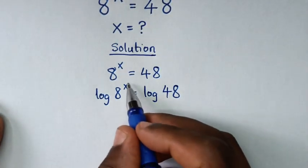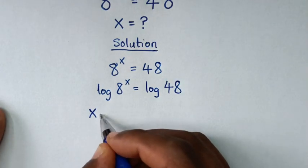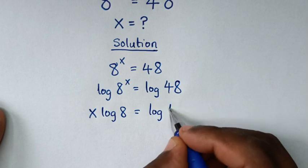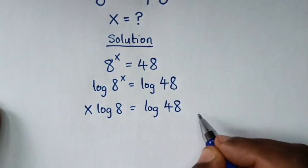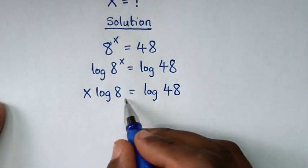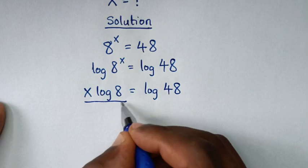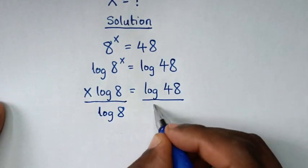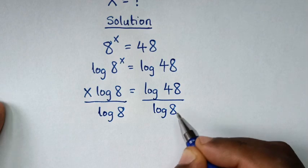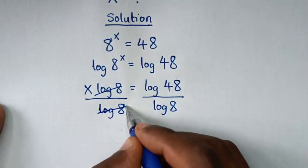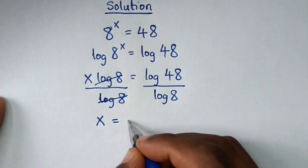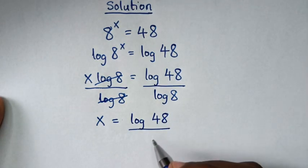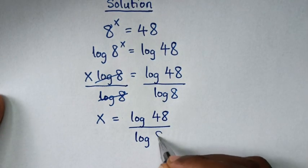Then this power of x will move to the base, so it will be x log of 8 is equal to log of 48. Then we'll divide by log of 8 in both sides, so it will be here over log of 8 and here over log of 8. So this and this will cancel, then it will be x is equal to log of 48 over log of 8.